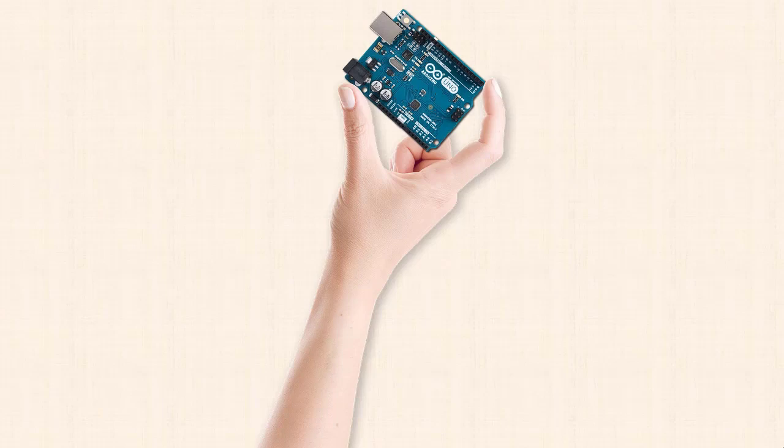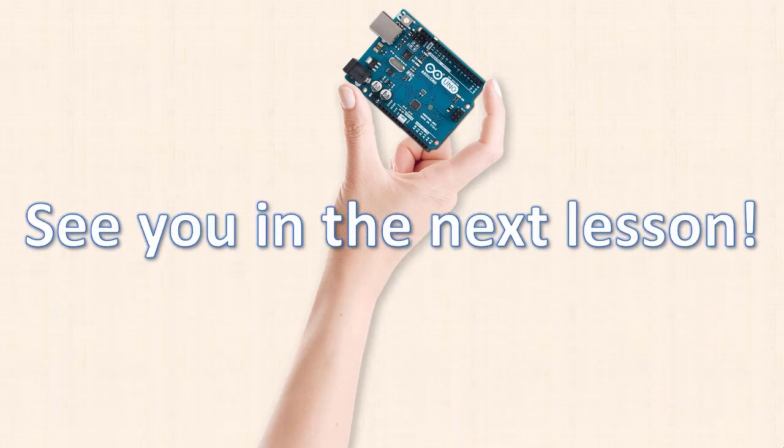So, now that we have a grasp on what it means to be analog or digital, we're going to start using some handy functions that deal with both in the upcoming lessons. We'll then use those functions to control some simple hardware that will be attached to the Arduino. I'll see you there.